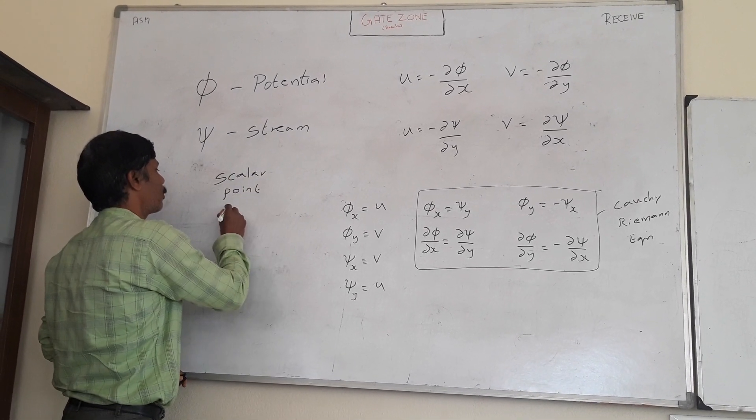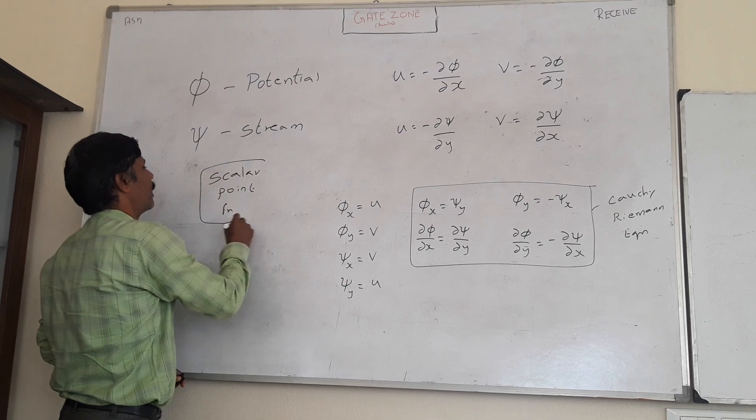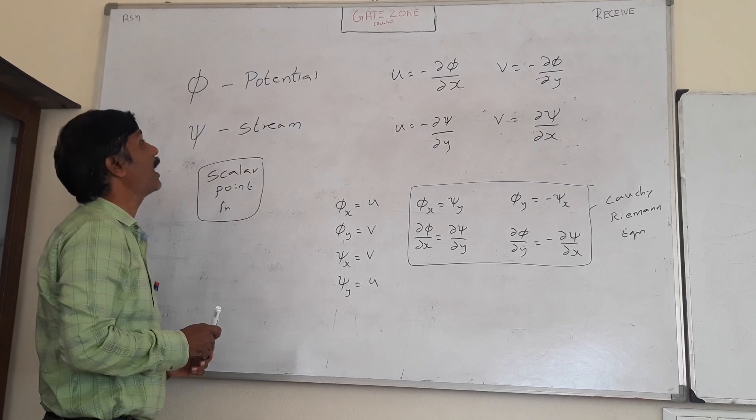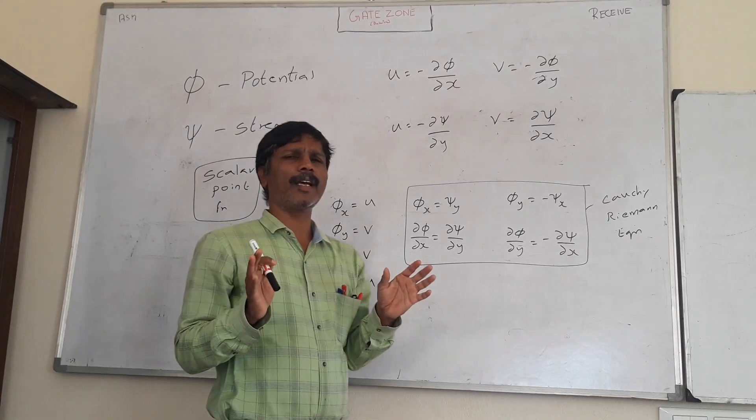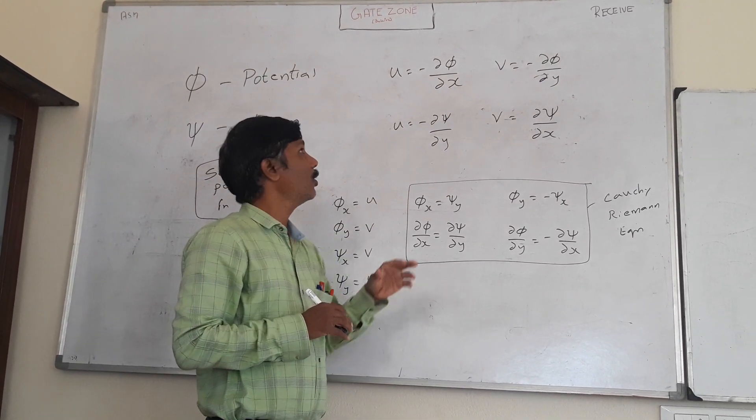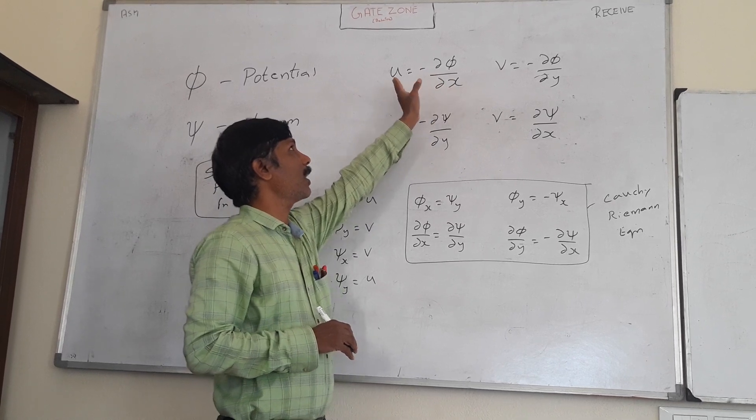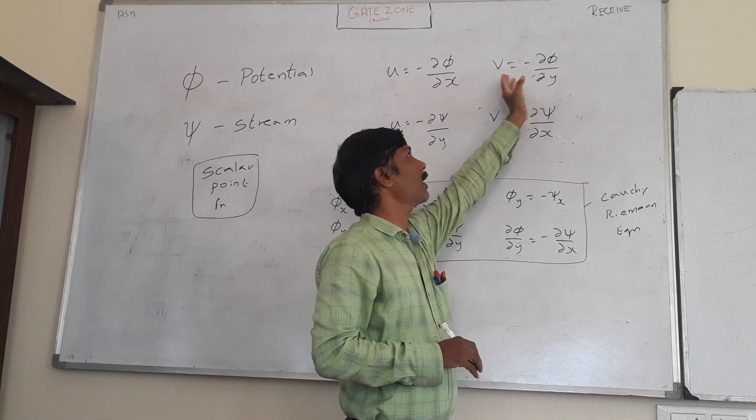Phi is a potential function, psi is a stream function. Let us call the velocity potential function. If we change the velocity potential, it extends the velocity. V will change the velocity of u as well.